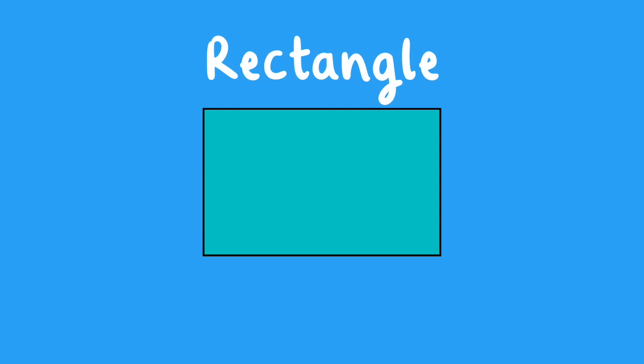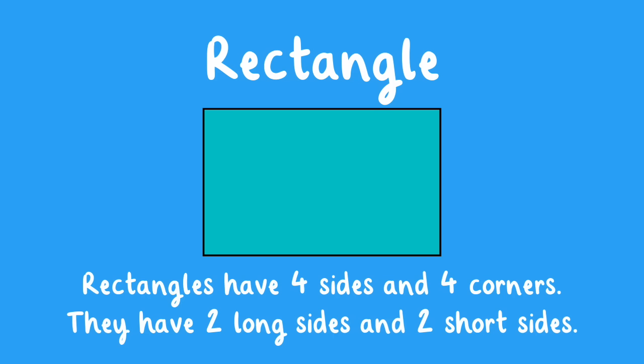Rectangle. Rectangles have four sides and four corners. They have two long sides and two short sides.